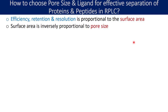Surface area is inversely proportional to the pore size. We are talking about the bonded stationary phase, coated over the silica particle. These are porous silica particles, and the pore size is a very important parameter. The smaller the pore size, the bigger the available surface area; the bigger the pore size, the smaller the available surface area.